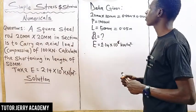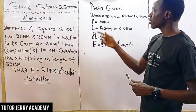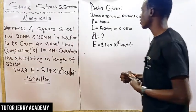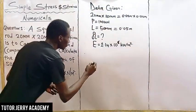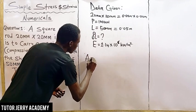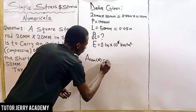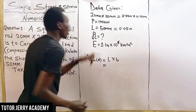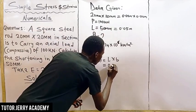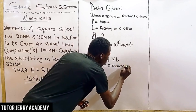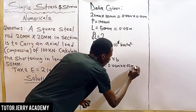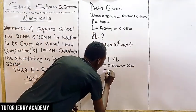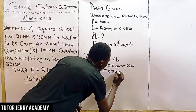So now let's solve this question. We are told that it's a square steel rod, so the area of a square is length times breadth. The area A is equal to 0.02 meters multiplied by 0.02 meters, which gives us 0.0004 square meters.